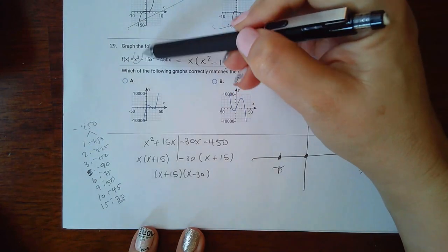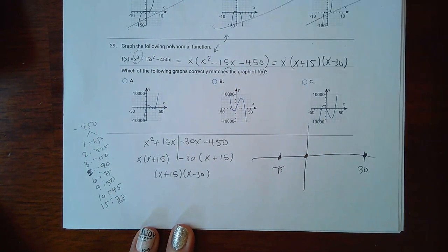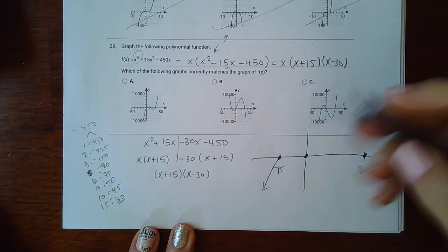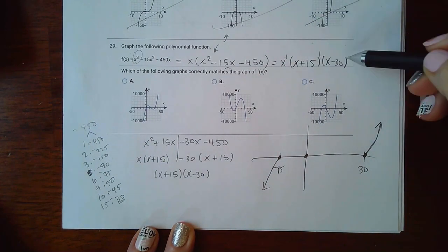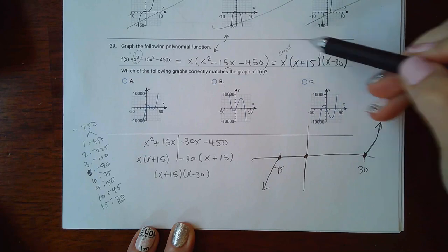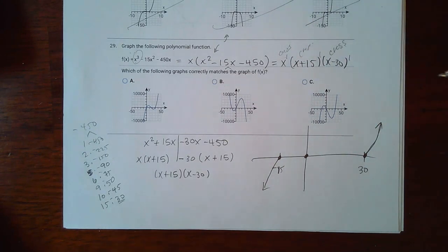Now I did have a positive x cubed in my leading term, which means the end behavior is going to look like this. So this one's going to go downward. This one's going to go upward. And all the exponents here are 1. So I'm going to be crossing through this one, crossing through this one, and crossing through that one. Now I don't know how high or low my little peaks have to go, but I'm pretty sure with just this information alone, you should be able to pick the graph.